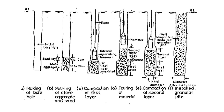As seen in the third figure, the first layer is compacted. Then the next step follows: pouring of aggregates and again the sand for the next layer. Once the second layer is placed, the cast-iron hammer is used again for compaction. This process is repeated till we achieve the stone column up to the ground level. This is about the construction of a stone column.